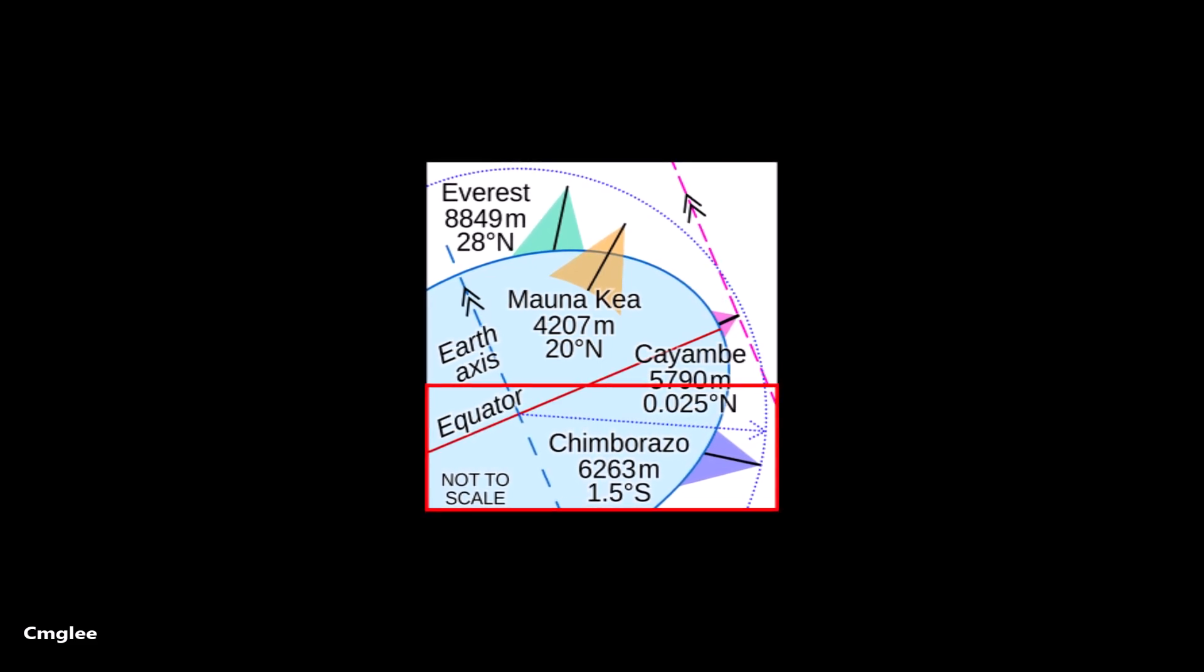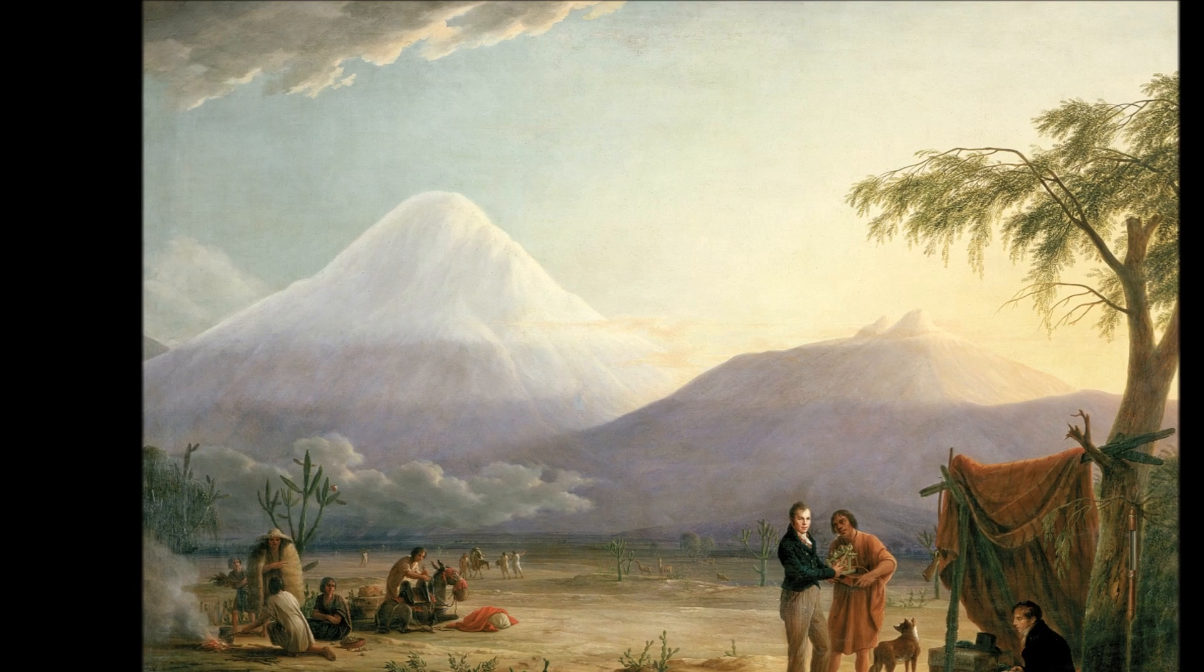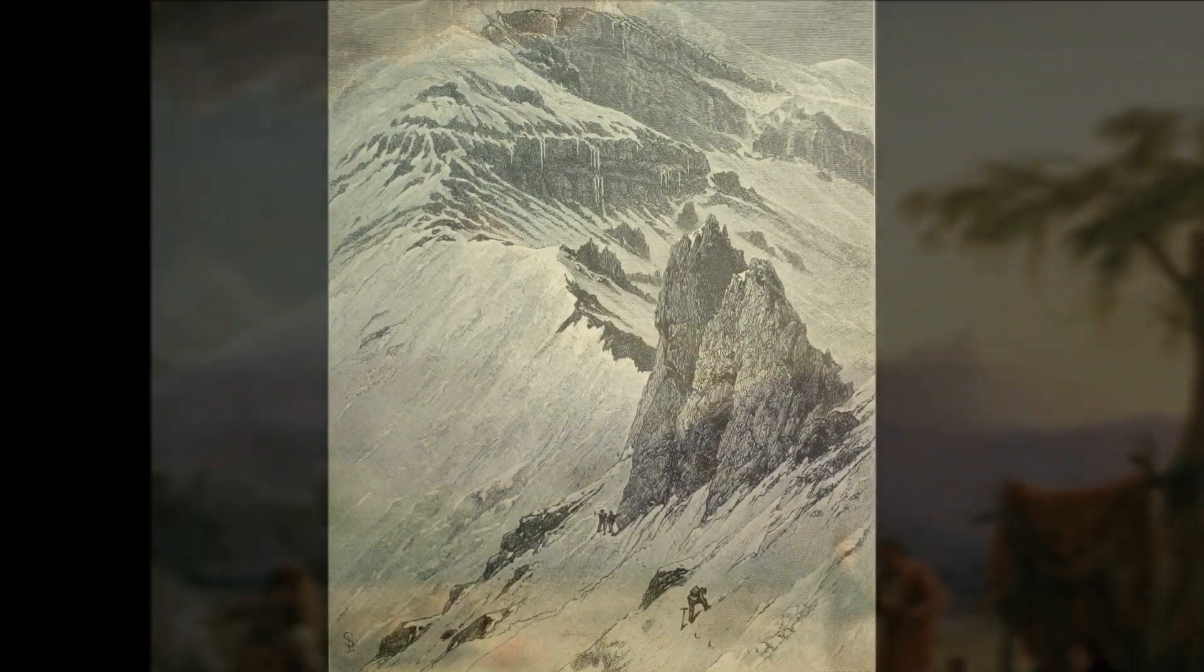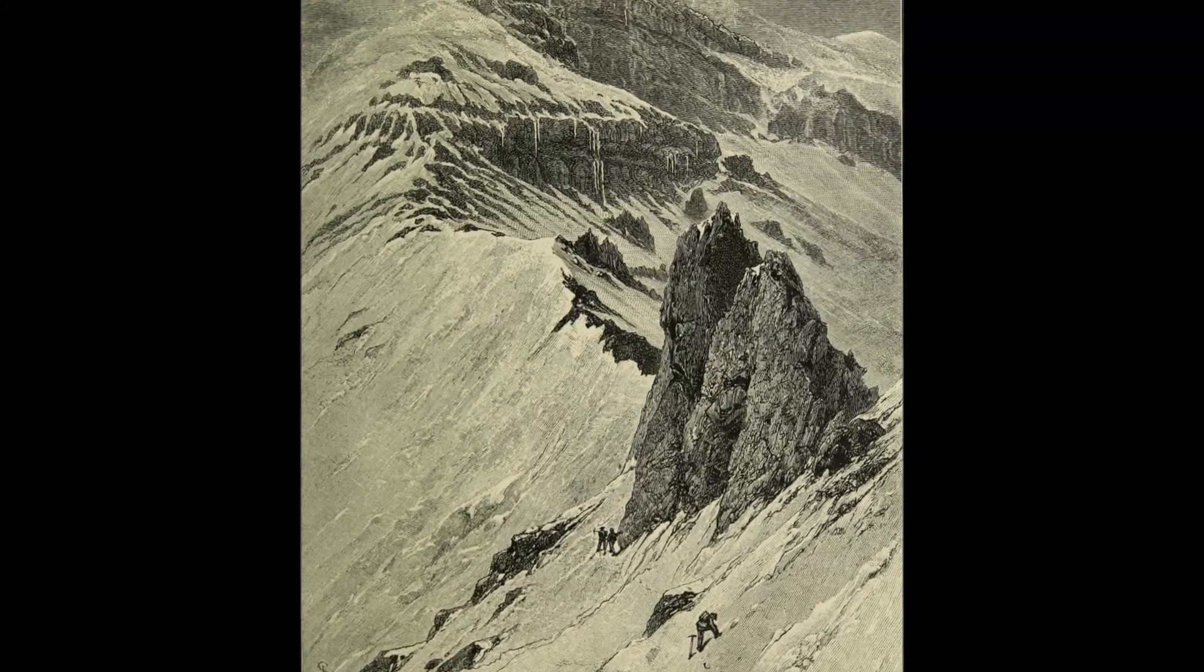And besides, it has a much cooler name. Despite its tropical location, Chamborazo is covered by glaciers and is a challenge for mountaineers having to contend with snow, ice, and jagged rock.